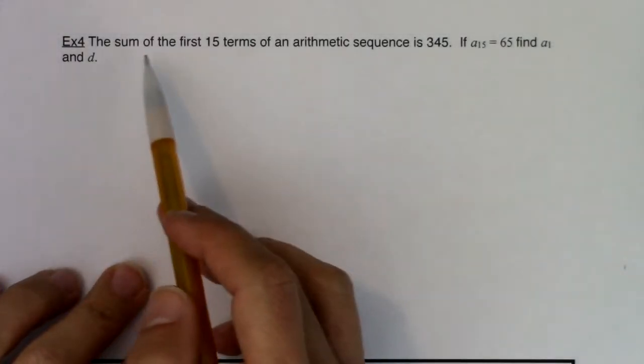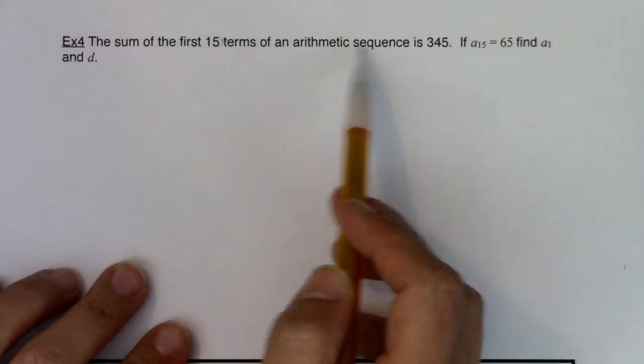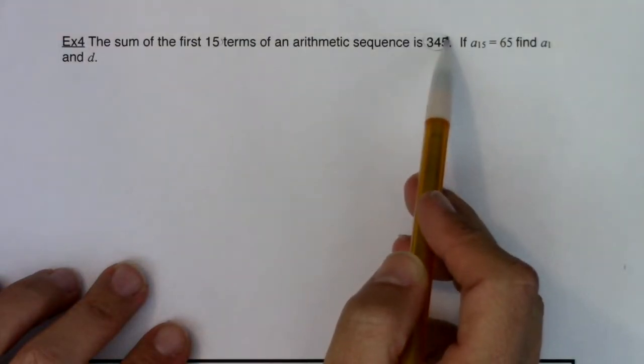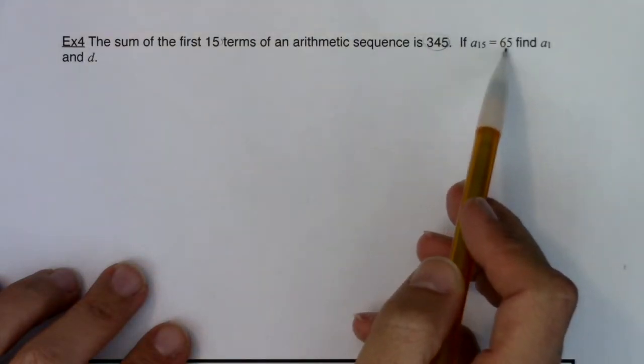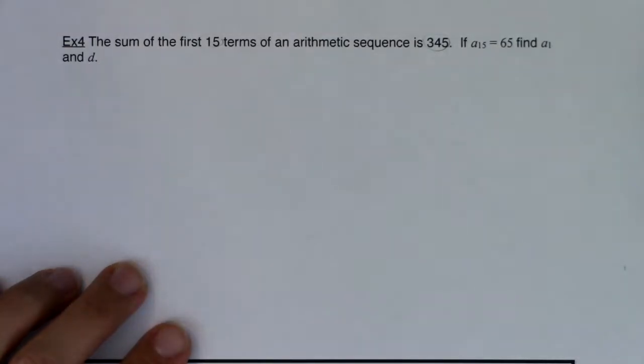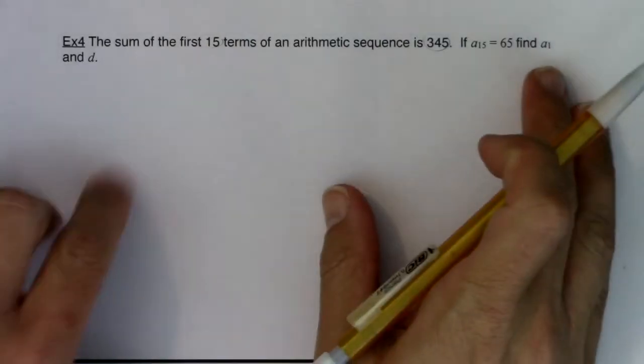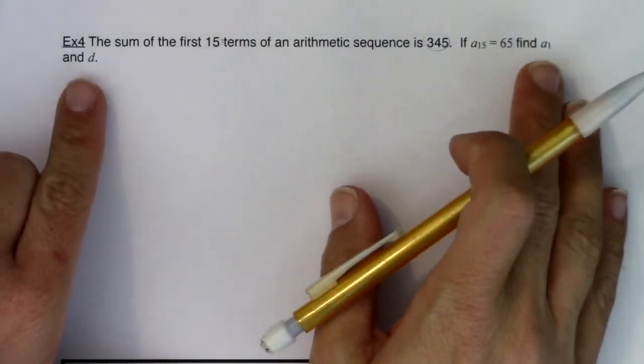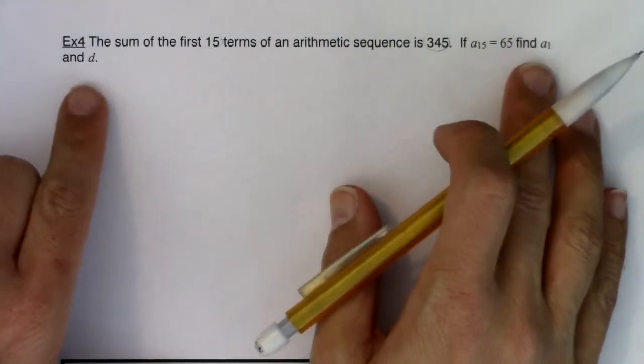It says the sum of the first 15 terms of an arithmetic sequence is 345. If a sub 15 equals 65, find a sub 1 and d. So I've got to find a sub 1 and d, and those are pretty important pieces of information, whether we're using the sequence formula or the series formula.